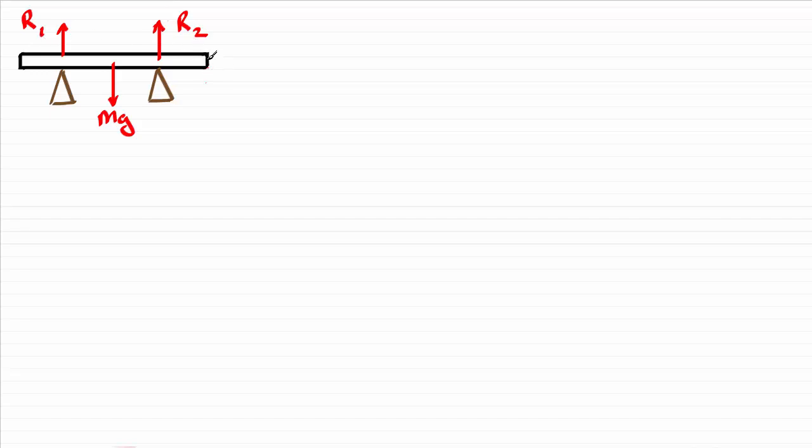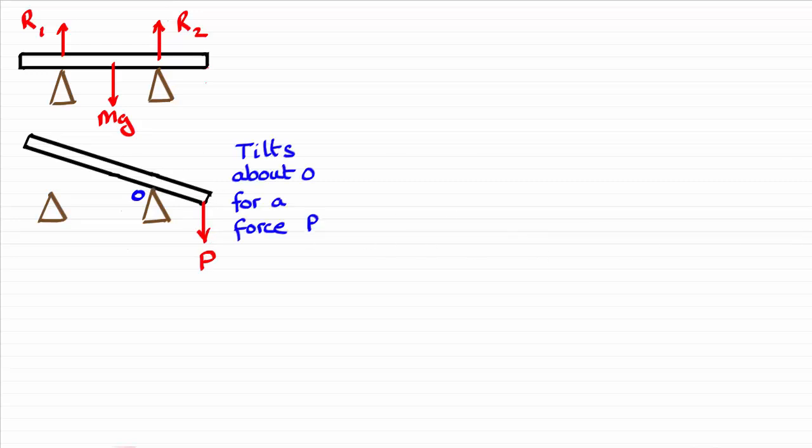Now suppose you pushed really hard here with say a force P downwards. Then what would happen is that that beam would tilt about this support. I've called it O, and so we say that it tilts about O for this force P.